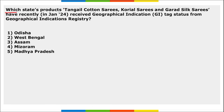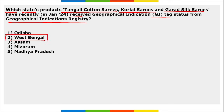Next: which state's products — Tangail Cotton Sarees, Korial Sarees, and Garad Silk Sarees — recently received GI tag status? It is West Bengal. The Geographical Indication Registry under DPIIT recently awarded GI tags to three handloom sarees of West Bengal: Tangail, Korial, and Garad. They received the GI tag under the goods of textile.